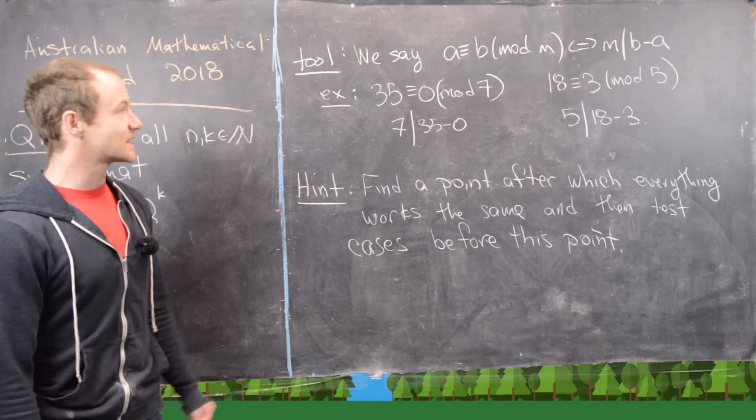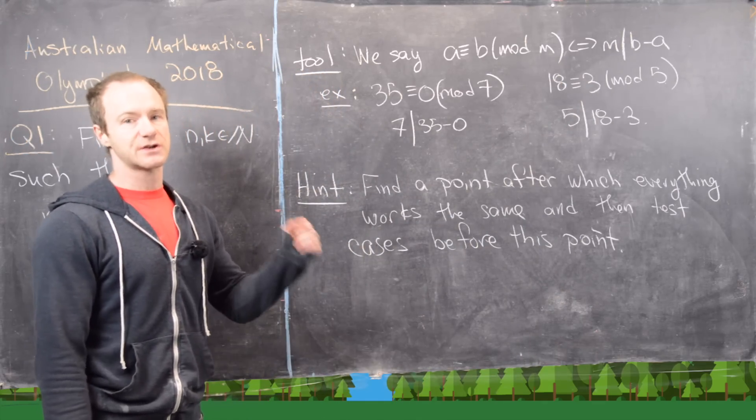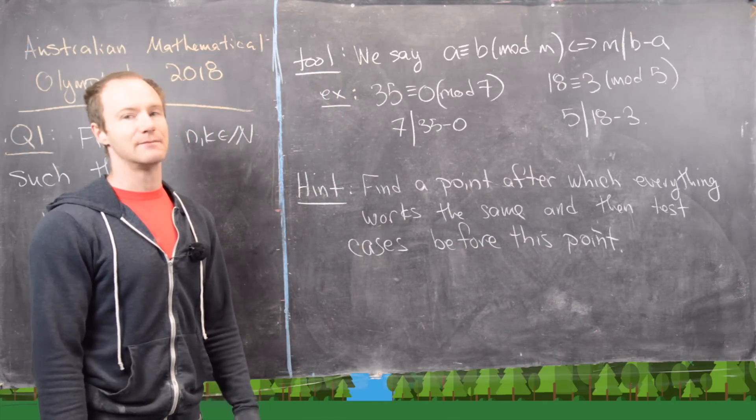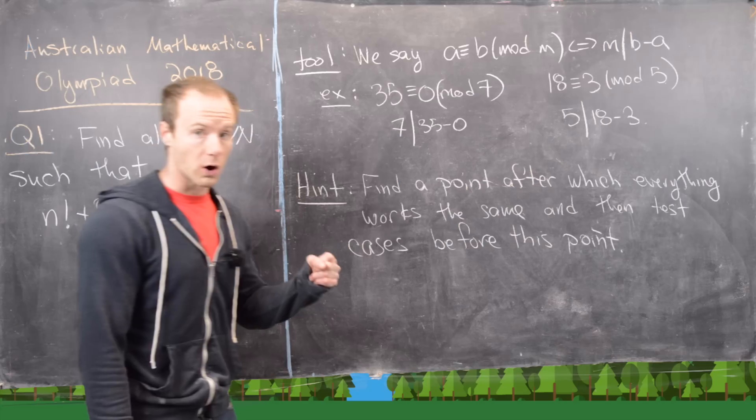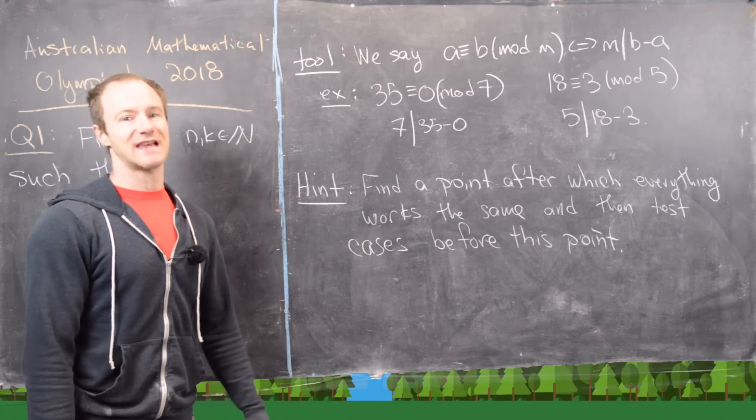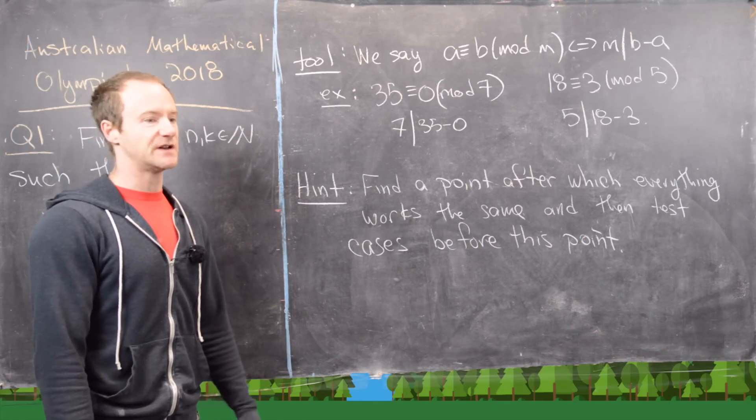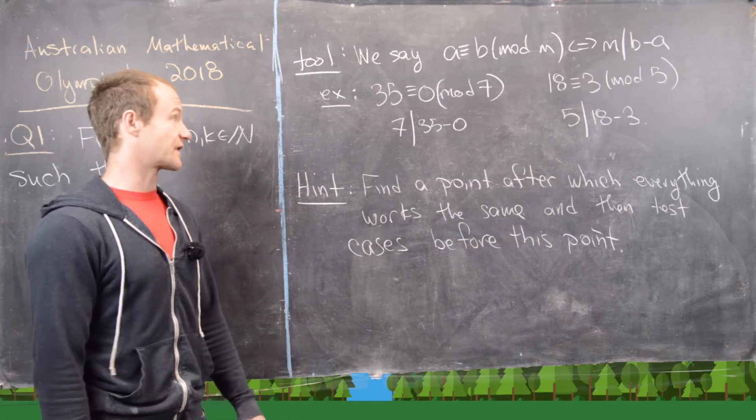We say that a is congruent to b mod m if and only if m divides b minus a. In other words, b minus a is a multiple of m, or if you divide b by m and a by m, you get the same remainder. I've got a bunch of videos on the channel on number theory if you want to check those out.